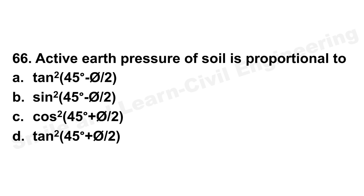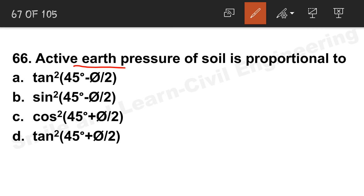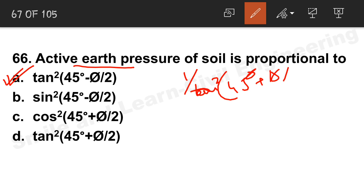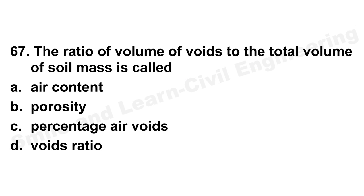Question 66: Active earth pressure of soil is proportional to tan²(45° − φ/2), which is Ka. Option A is correct. For passive earth pressure it is tan²(45° + φ/2), or equivalently 1/tan²(45° − φ/2). Question 67: Ratio of volume of voids to total volume of soil mass is porosity. Option B is the correct answer.